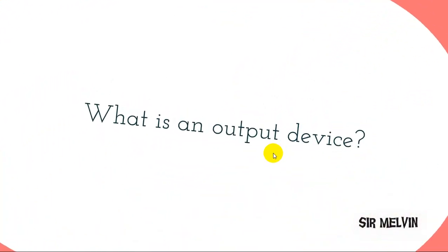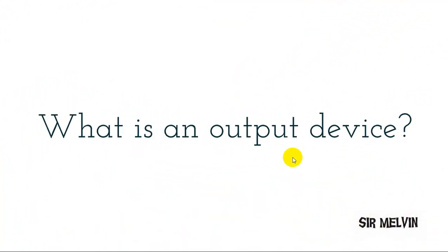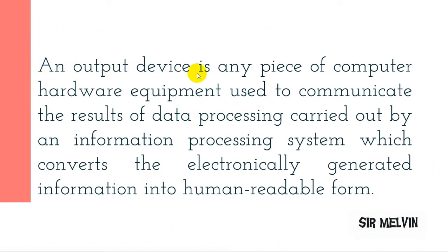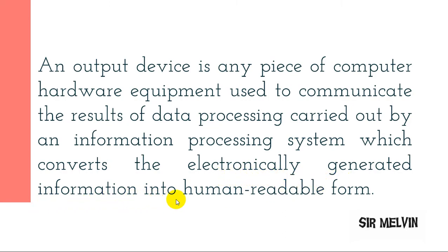Now for the types of output. But first, what is an output device? An output device is any piece of computer hardware equipment used to communicate the results of data processing carried out by an information processing system, which converts electronically generated information into human-readable form.